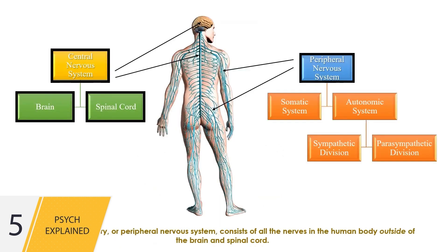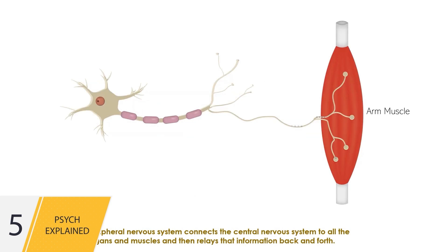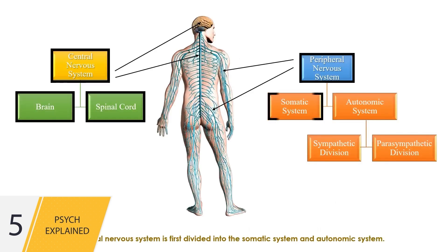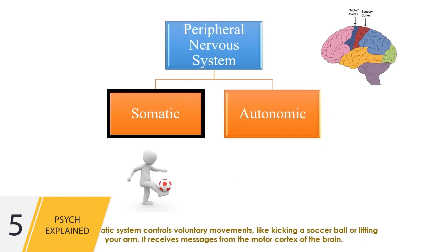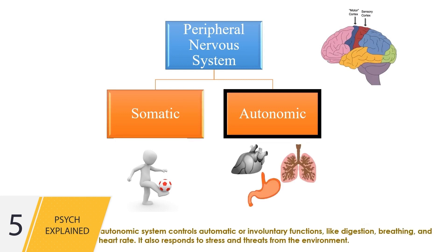The second category, the peripheral nervous system, consists of all the nerves in the human body outside of the brain and spinal cord. It connects the central nervous system to all the organs and muscles and relays information back and forth. The peripheral nervous system is first divided into the somatic system and autonomic system. Our somatic system controls voluntary movements, like kicking a soccer ball or lifting your arm, and receives messages from the motor cortex of the brain. Our autonomic system controls automatic or involuntary functions, like digestion, breathing, and heart rate.